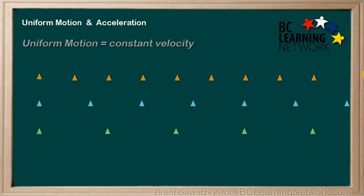It looks like the orange truck doesn't get very far each second, compared to the blue truck which seems to get a little bit further during each second. And the green truck of course gets the furthest during each second — the biggest spaces. Therefore, we can conclude that the green truck must be going the fastest.